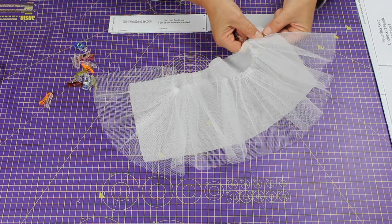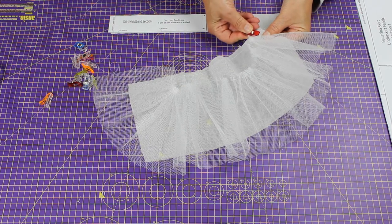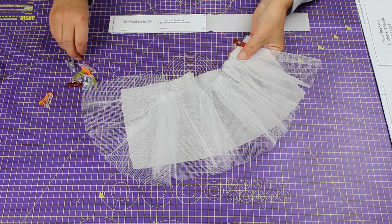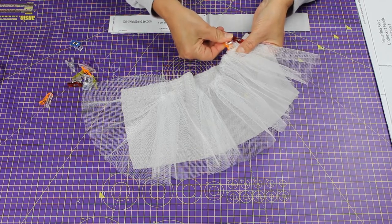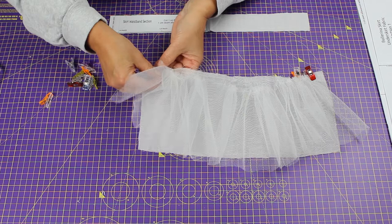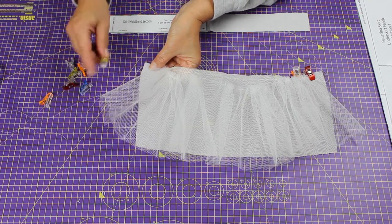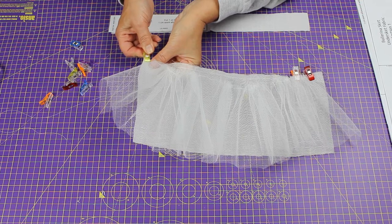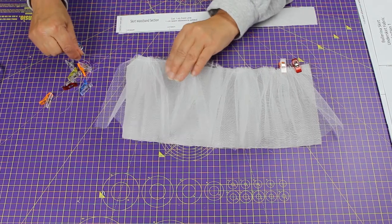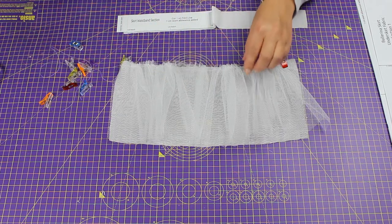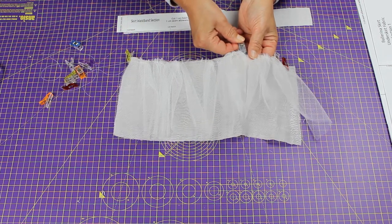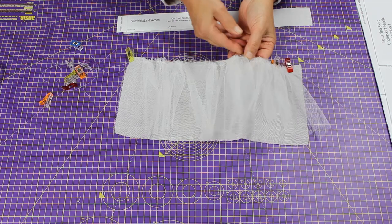Take your fabric clips and clip the edge of the net to the edge of the fabric. You want the edges to match perfectly. I'm just going to clip to there because I want that to match, and then I can use my longer threads to pull this in.